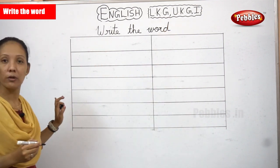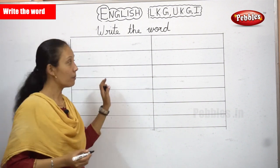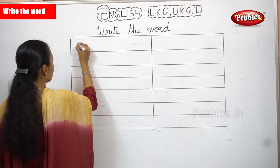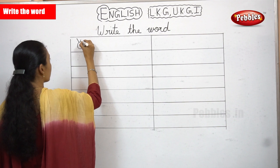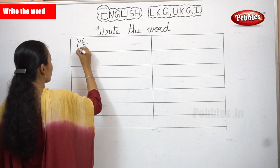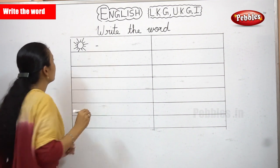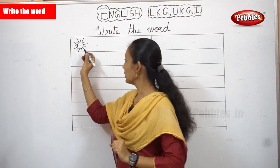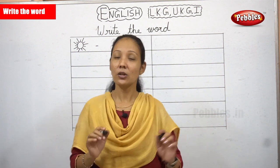So now I will give you a few pictures. I am drawing the first picture. Now, what picture is this? This is a sun. So now what are we supposed to do?